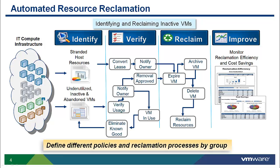Stage 1: Identify. Through endpoint discovery and data collection, the vCloud Automation Center is able to develop a list of machines and their characteristics. Then, by using its filtering capabilities, admins can identify candidates for reclamation. These may be machines that have been powered off for a period of time, machines that average low to no resource utilization, or even machines whose owners have been deactivated in Active Directory.